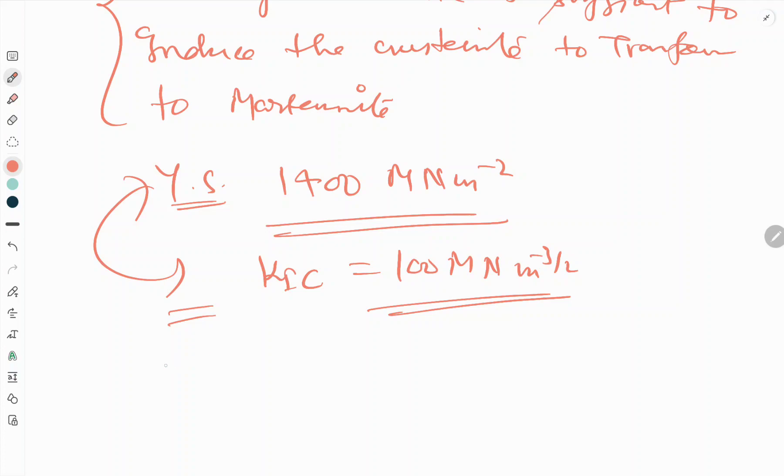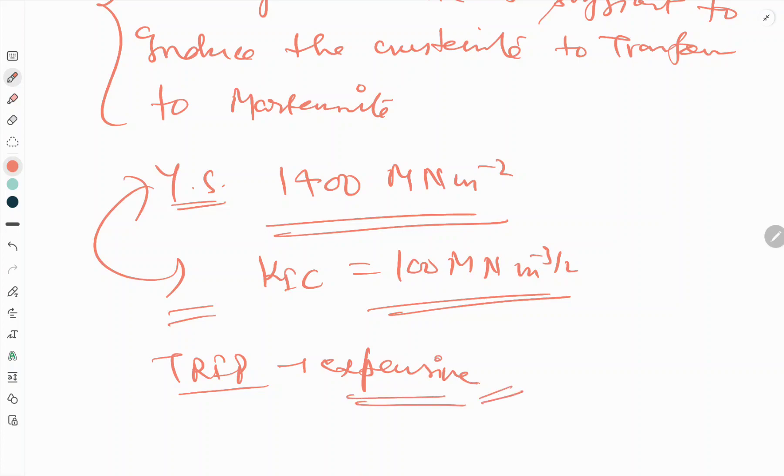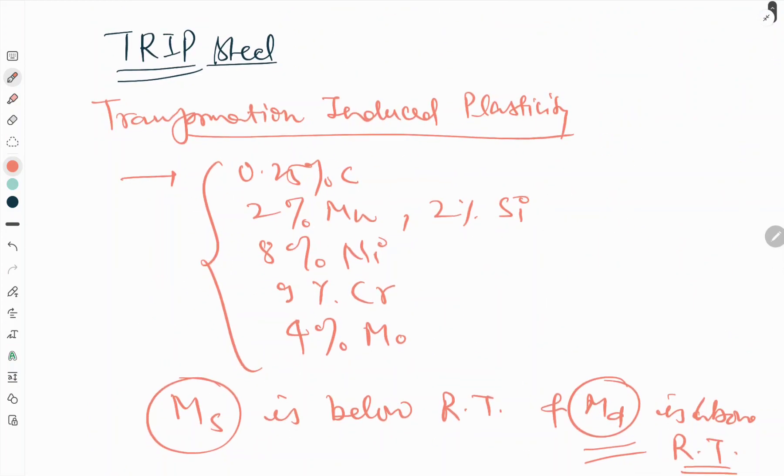So this is also very expensive and used for specialized applications only. This is a short video about TRIP steels, which is also a kind of high strength structural steel.